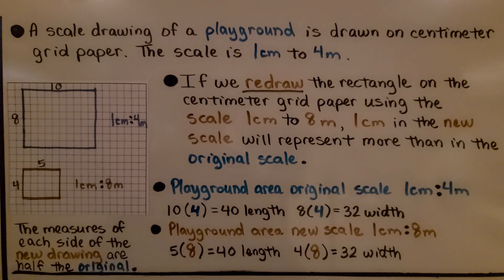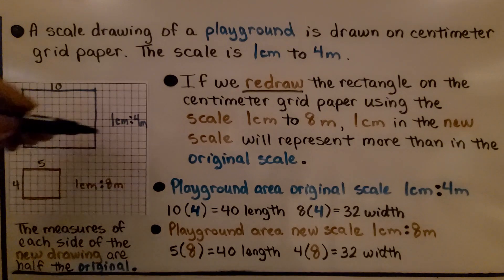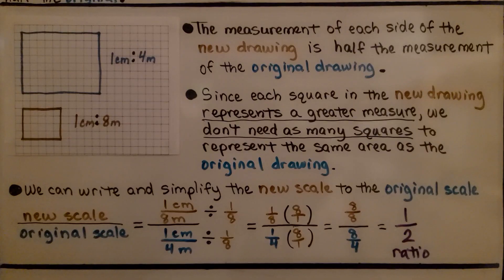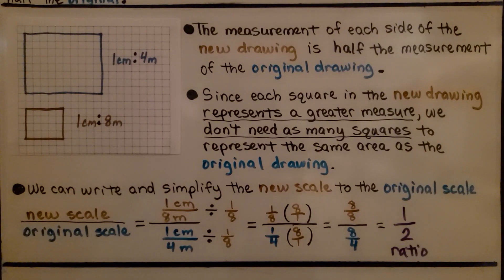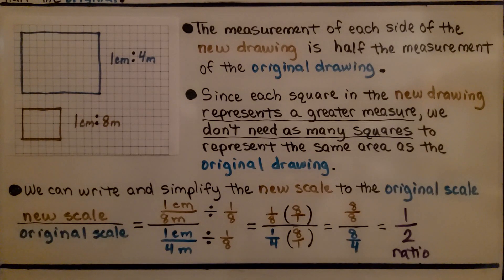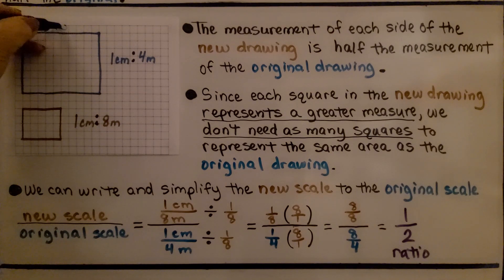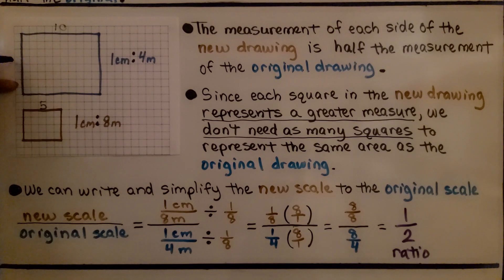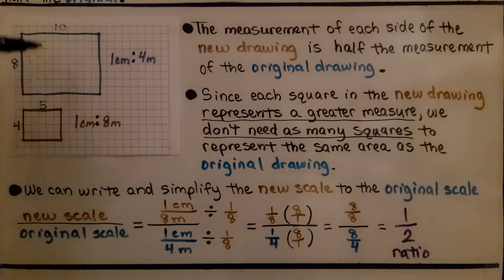The measures of each side of the new drawing are half the original — four is half of eight. So the measurement of each side of the new drawing is half the measurement of the original drawing. Here we've got ten versus five, and eight versus four. Five is half of ten, and four is half of eight.